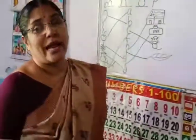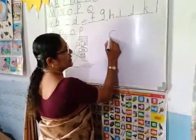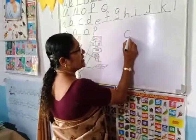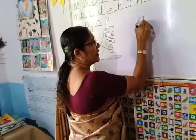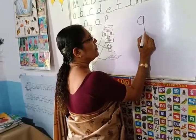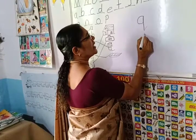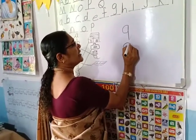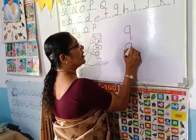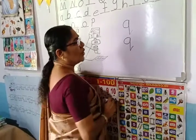Today we are going to write baby letter Q. How to write baby letter Q? First a cave — like this. And touch up and come down, and put like this. Do you understand? Put a cave like this, and touch here, and draw a line here, and go up. Q.